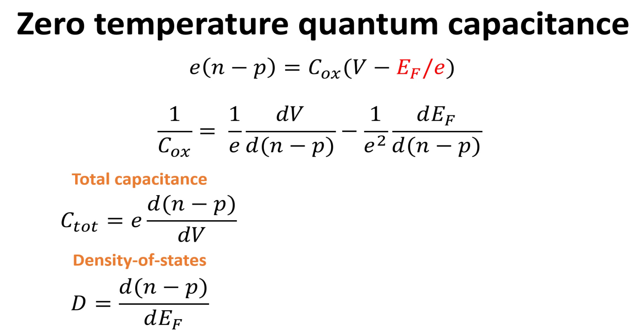We note that the first term on the right-hand side is related to the total capacitance, defined as the rate of change of charge with respect to voltage. The second term on the right-hand side is related to the density of states, defined as the rate of change of carrier densities with respect to the Fermi energy.